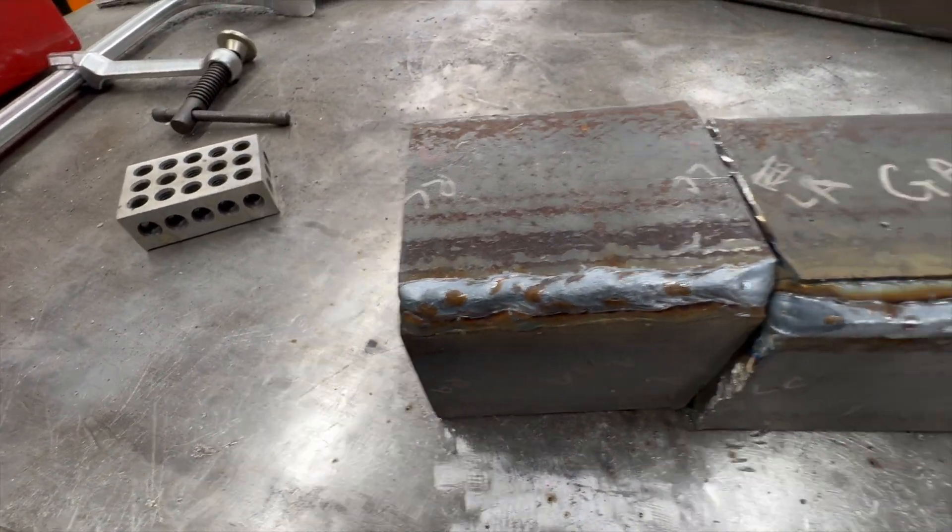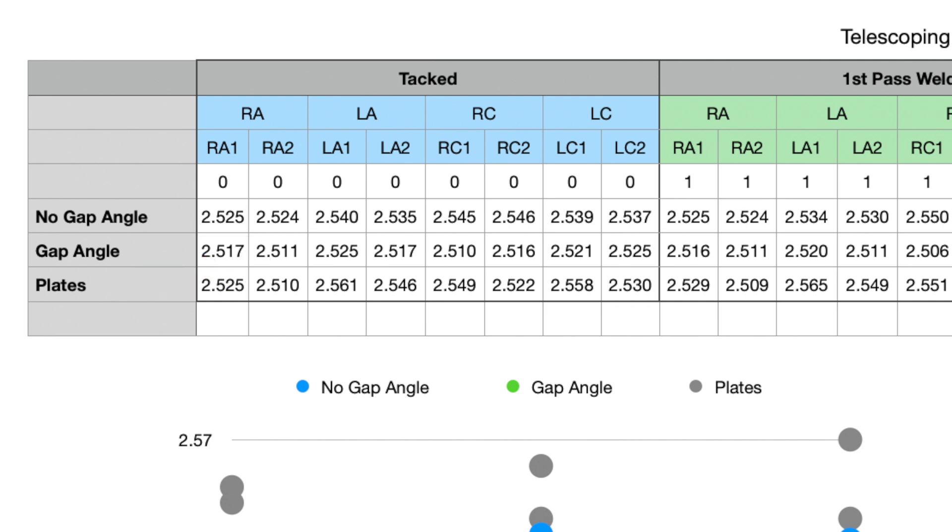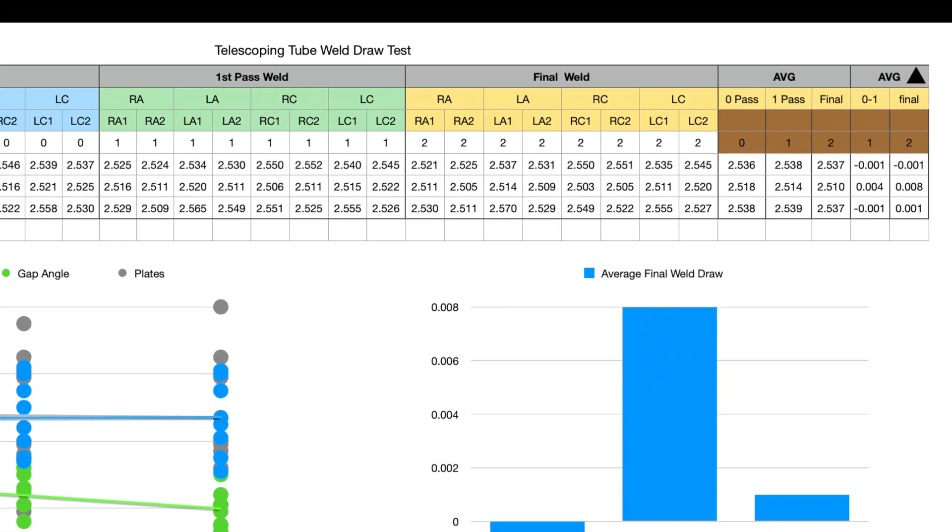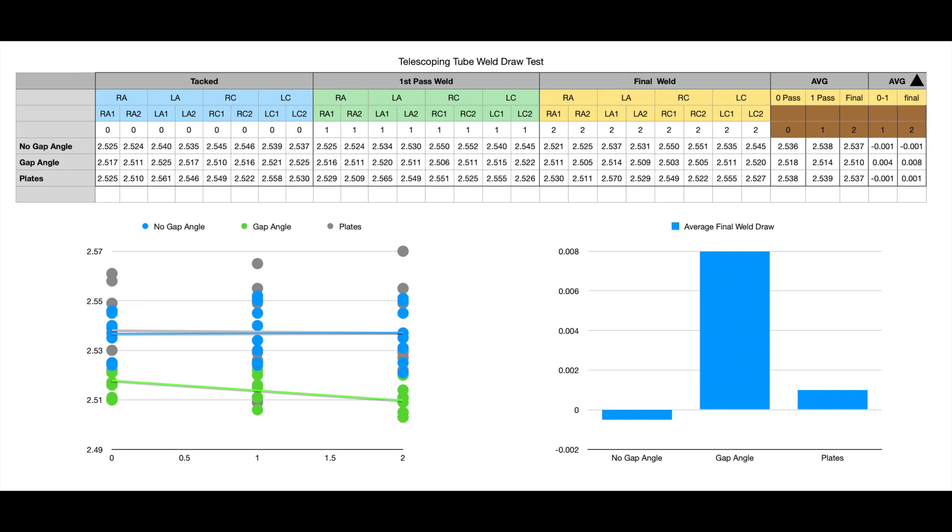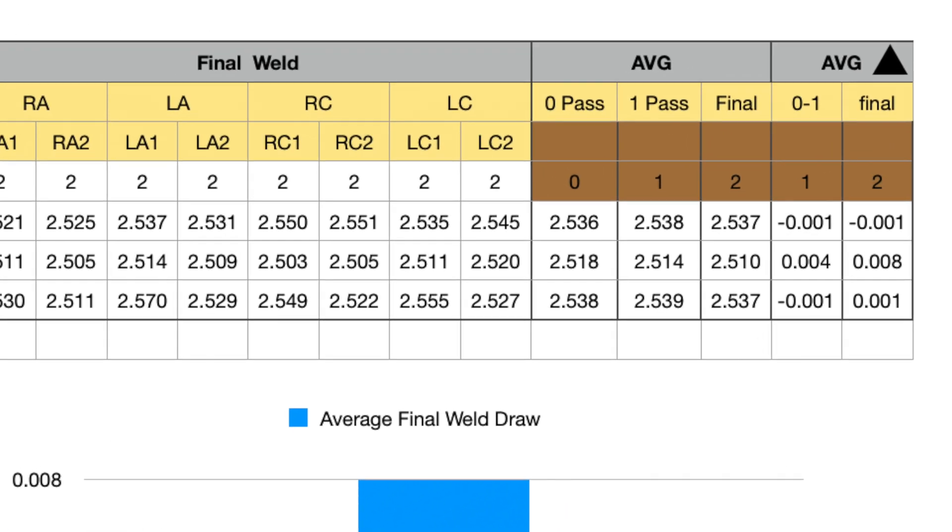So here is the spreadsheet I put together for all of the dimensions that I took from each of these test specimens. This includes the no-gapped angle, the gapped angle, and the plates test specimen. And then you can see the sections for the tack, the first pass weld, and the final weld states. There were eight dimensions for each of these conditions and test specimens. The average spacing for my no-gapped angle was 2.537, so we're 37 thou over what that square tube is. The gapped angle ended up at 10 thou over the square tubing, and the plate ended up being exactly the same at 37 thou as the no-gapped angle.